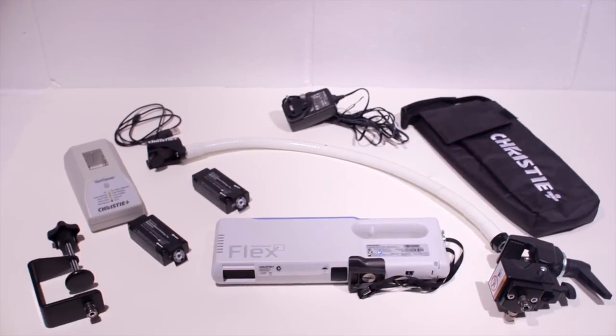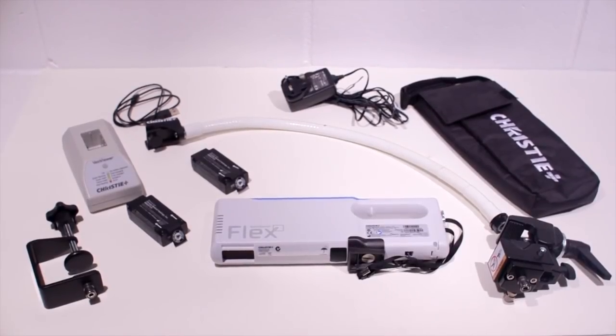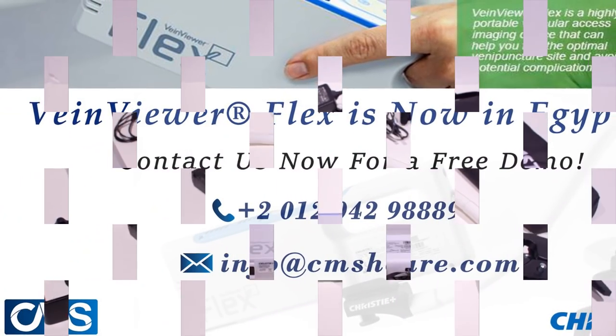VainViewerFlex comes complete with a range of accessories including two S-mount arms with two clamp options, two rechargeable batteries, mains adapter, and protective bag.